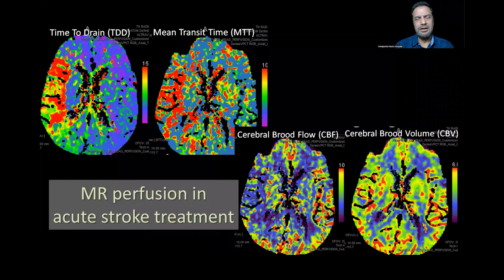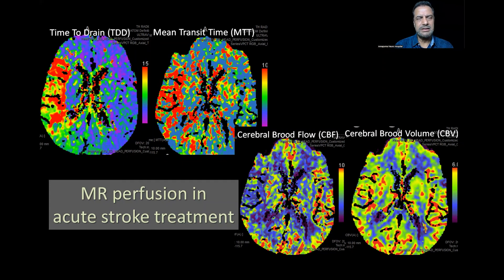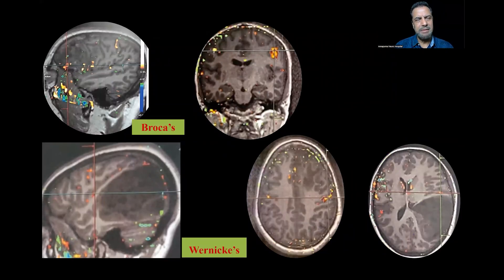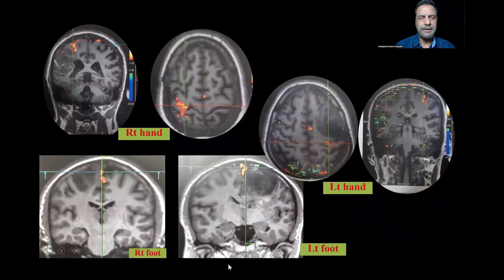MRI can also study cerebral blood volume, blood flow, and perfusion of the brain, either by contrast or without contrast, to see ischemic areas. Functional MRI using BOLD techniques can detect Broca's area when asking the patient to speak, and the relation of motor areas of the hand and leg to a tumor. Today we just talk about normal anatomy: T1, T2, and FLAIR.